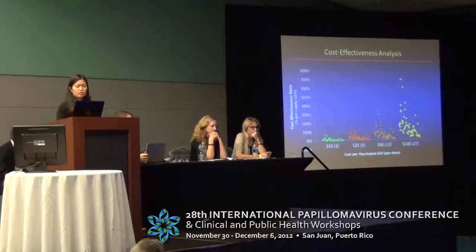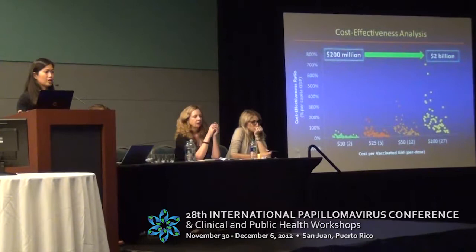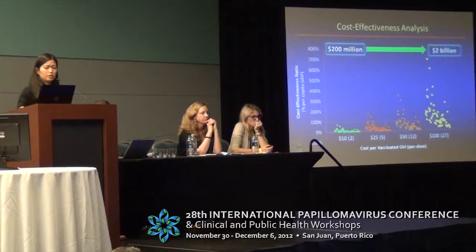Irrespective of the cost-effectiveness profile, the financial expenditure required to vaccinate even a single birth cohort across all GAVI-eligible countries at 70% coverage is quite daunting. At $10 per vaccinated girl, the cost would be roughly $200 million, rising to up to $2 billion at $100 per vaccinated girl.